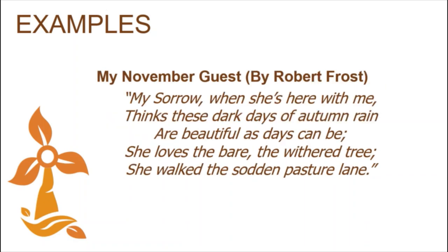My November Guest: 'My sorrow, when she's here with me, thinks these dark days of autumn rain are beautiful as days can be. She loves the bare, the withered tree. She walked the sodden pasture lane.' This poem by Robert Frost is yet another good example of imagery. In the second line, the poet uses 'dark days,' an instance of visual imagery. In the fourth line, 'the bare, withered tree' uses the imagery of sight. In the fifth line, 'the sodden pasture' is also an instance of tactile imagery.